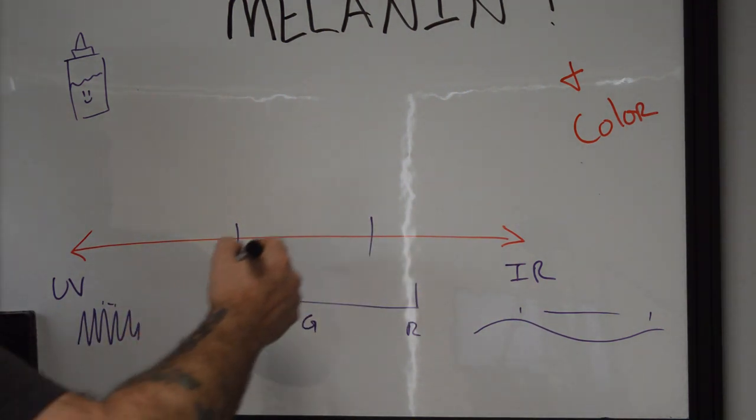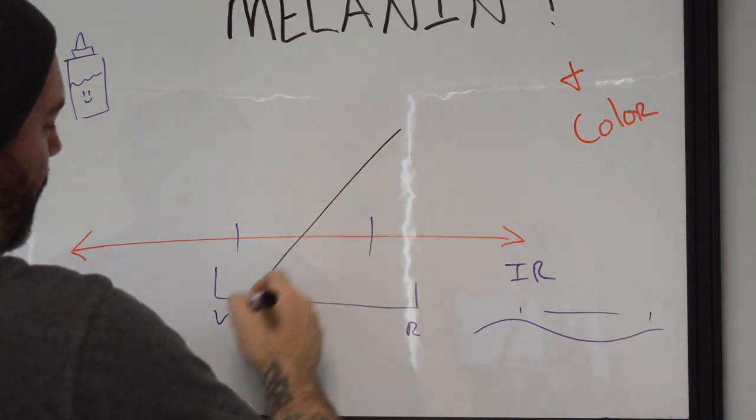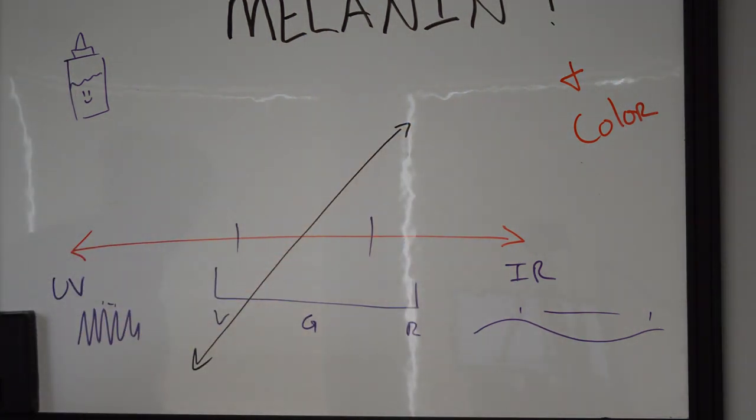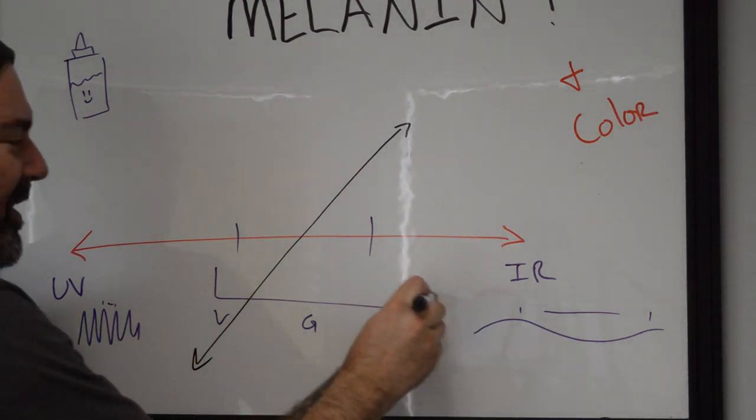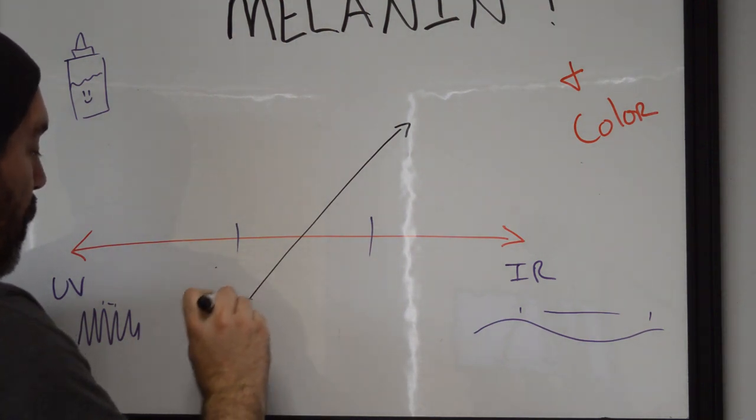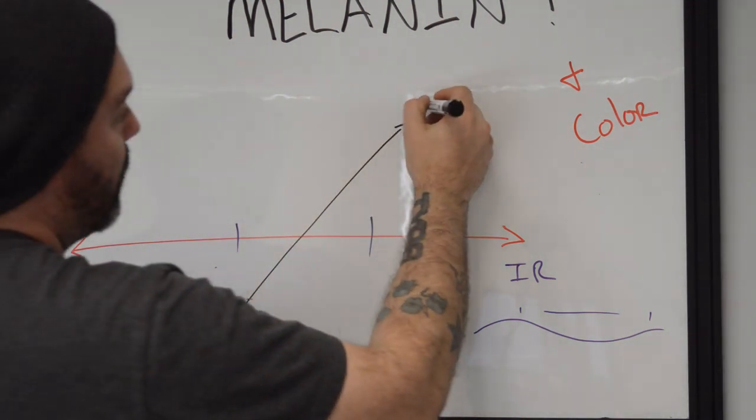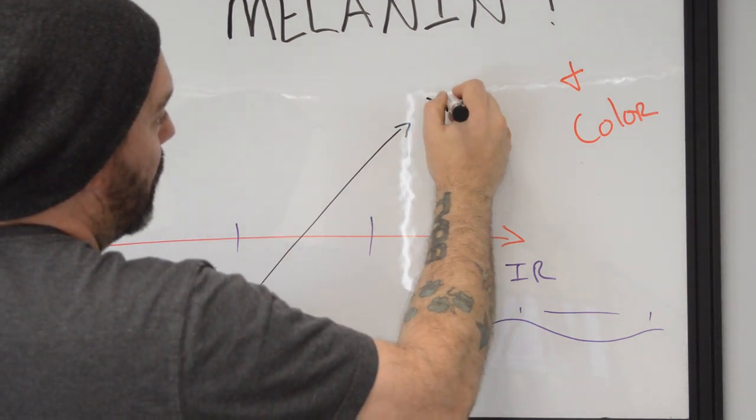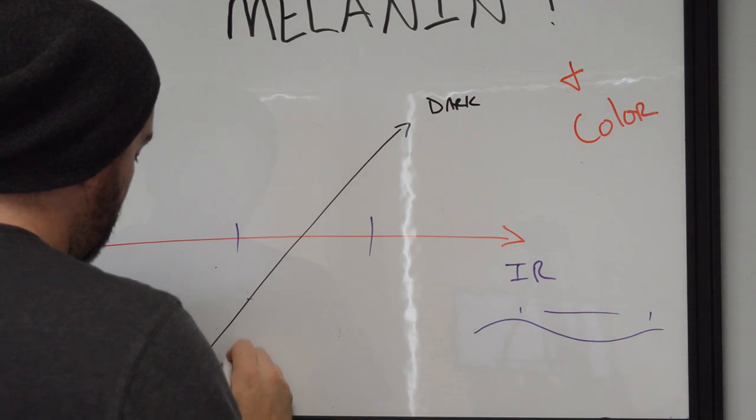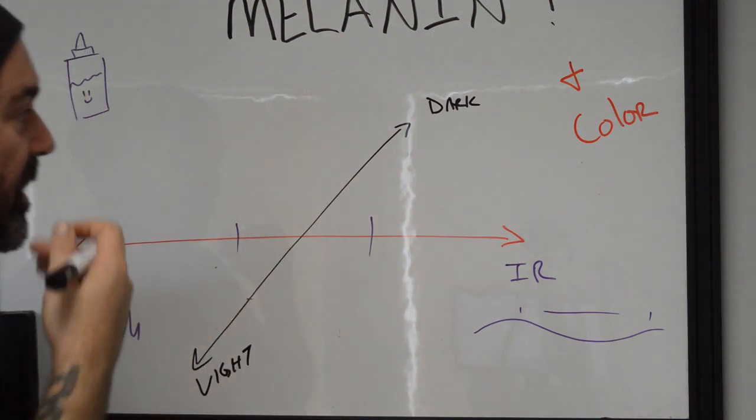Now in real life, there's another axis that this goes on. It becomes 3D. I'm being really dramatic today. Maybe I've had too much coffee. Anyways, when we think about this, we have our dark values and our light values.